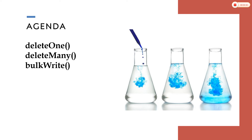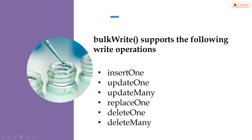So what is bulk write? Generally MongoDB provides a way to perform multiple write operations using bulkWrite. We can perform bulk insert, bulk update, and bulk remove operations simultaneously. The ordered option, when set to true, means if any error occurs during bulk write, MongoDB will not process the remaining write operations and will return an error. If ordered is set to false, MongoDB will still process the remaining write operations even if an error occurs. The bulk write supports the following operations: insertOne, updateOne, updateMany, replaceOne, deleteOne, and deleteMany.